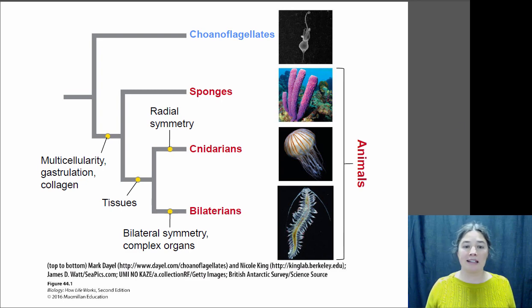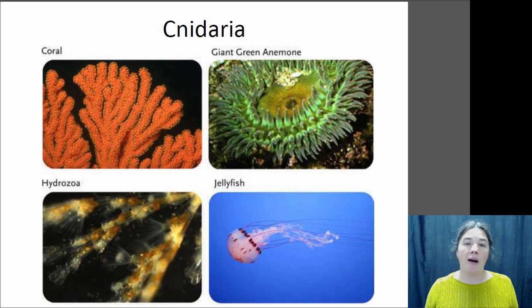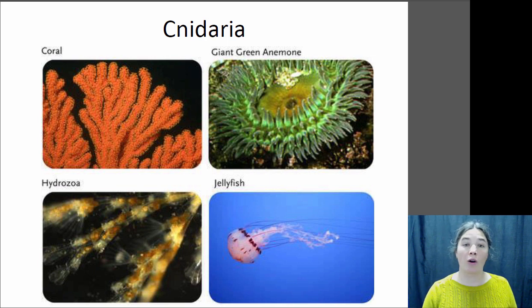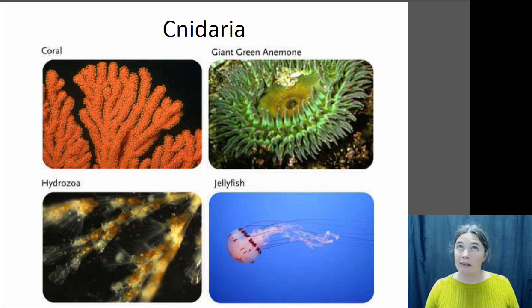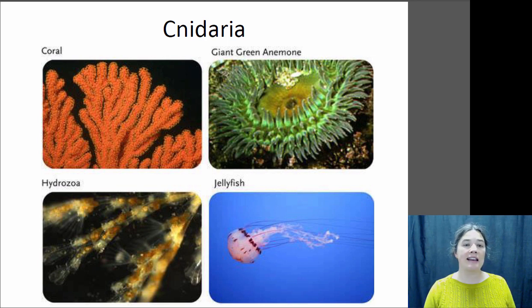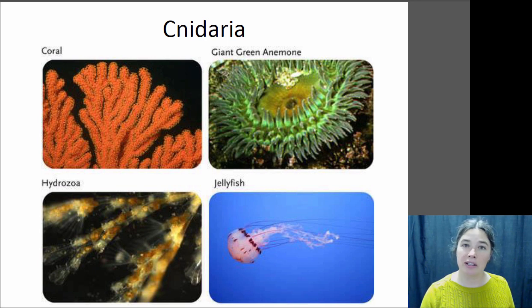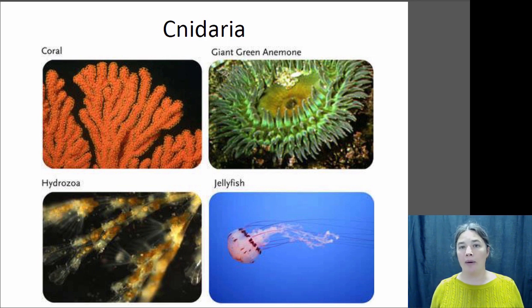The cnidarians include jellyfish, anemones, corals, and hydrozoans. They have radial symmetry and are diploblastic, meaning they only have two embryonic tissue layers. They tend to have a gastrovascular sac rather than a full digestive system, making them a pretty unique and very cool group of creatures.